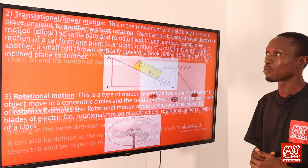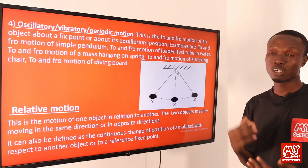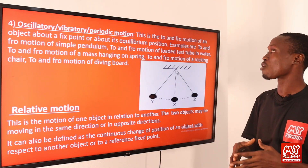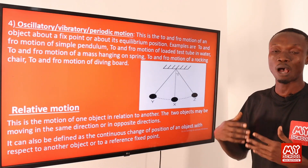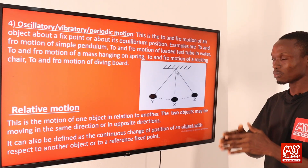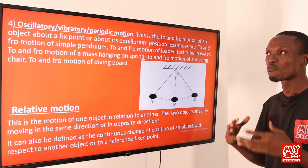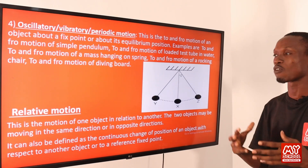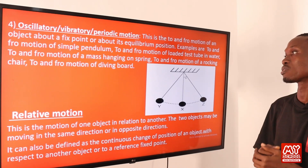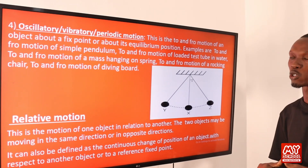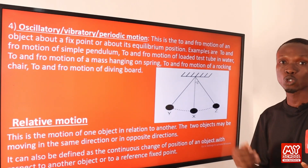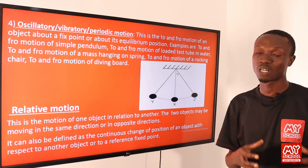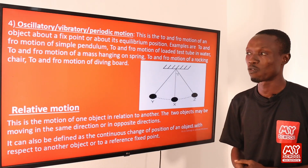Oscillatory motion, also known as vibratory or periodic motion, is the to-and-fro motion of an object about a fixed point or about its mean position. Examples include the to-and-fro movement of a simple pendulum, a loaded test tube in water, a mass hanging on a spring, a rocking chair, a diving board, a talking drum, and the contraction and expansion of the heart during breathing.